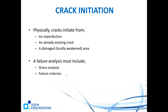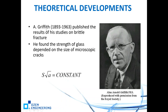Griffith is known as the father of fracture mechanics. Back in the 1920s, he did experiments and found a relationship between crack size and applied stress. Through experimental observation alone — no formulations — he found that stress times the square root of crack length is a constant. This was a very important experimental finding.